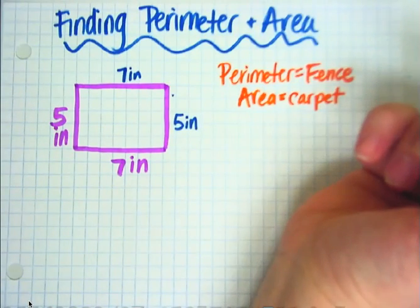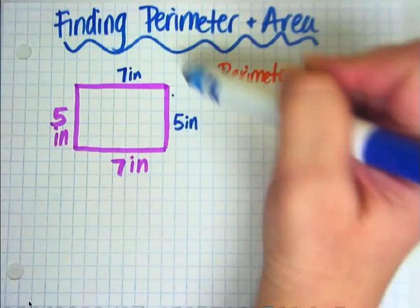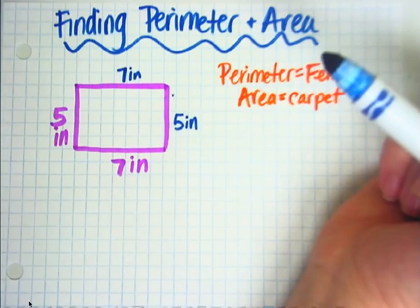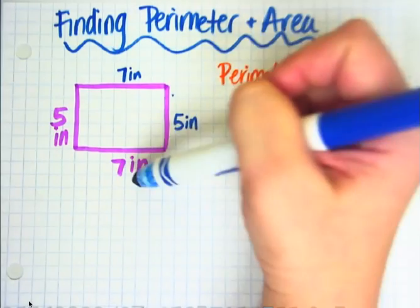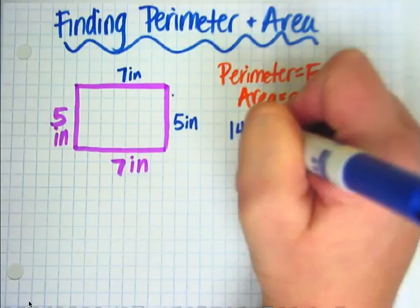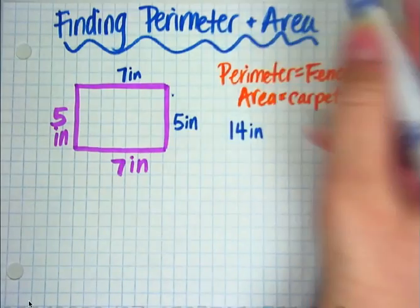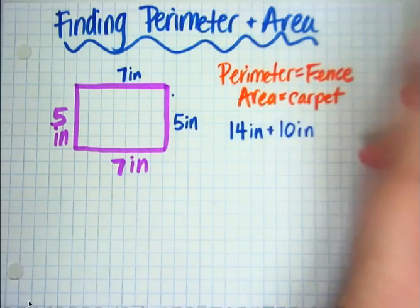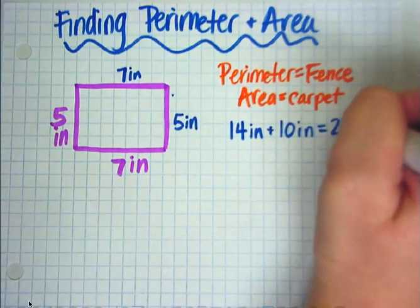So for perimeter, all we have to do is add up the sides. Now, you guys are really good at doubling, so we're going to take a shortcut. The double of 7, we know, is 14 inches. The double of 5, we know, is 10 inches. So if we were to add 14 plus 10, we would get 24 inches.